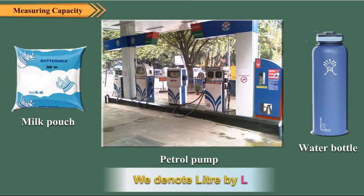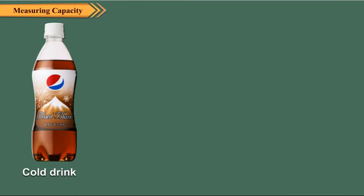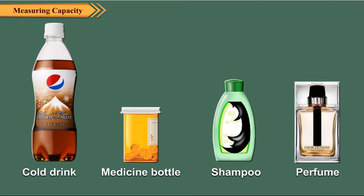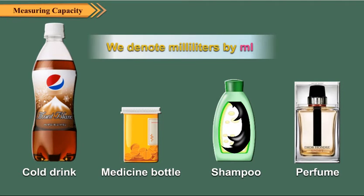The standard unit of capacity is liter. We measure the quantities of liquids such as milk, petrol, oil, and water in liters. Milliliter is the smaller unit of capacity. Cold drinks, medicinal liquids, shampoos, perfumes, etc. in small bottles are measured in milliliters.